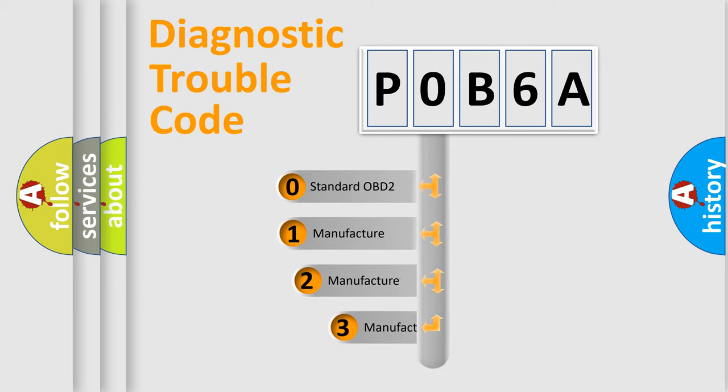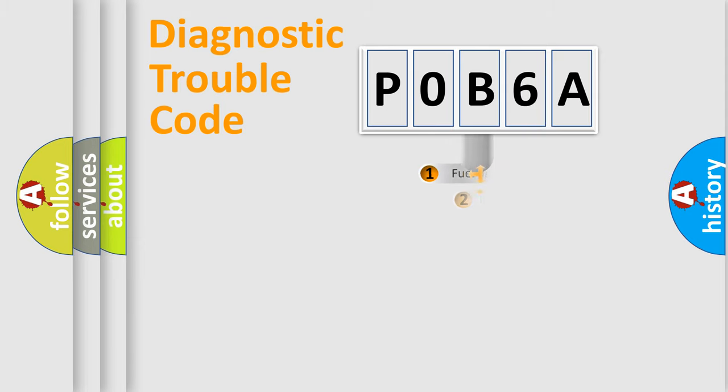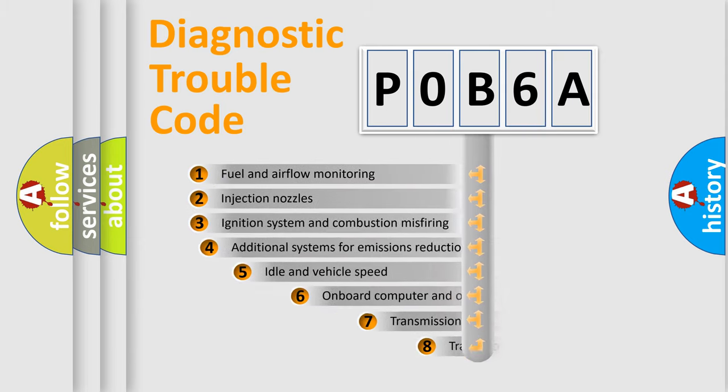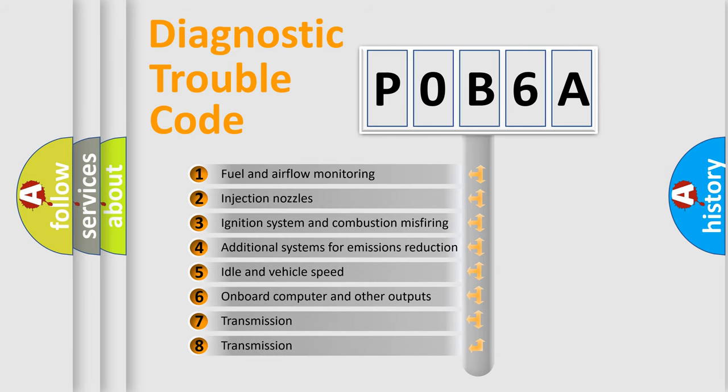If the second character is expressed as zero, it is a standardized error. In the case of numbers 1, 2, or 3, it is a car-specific error. The third character specifies a subset of errors.